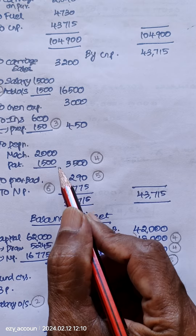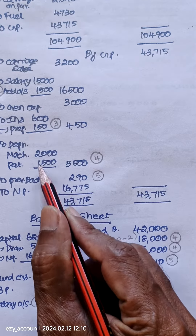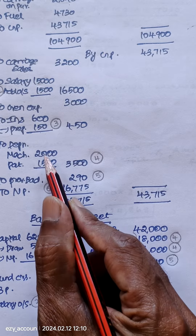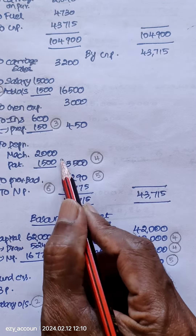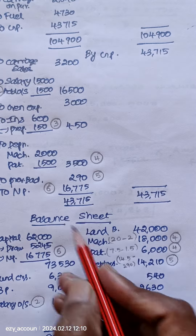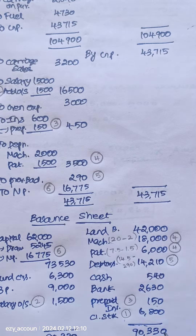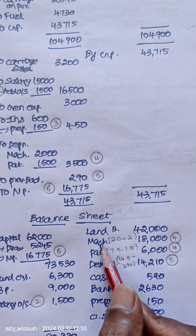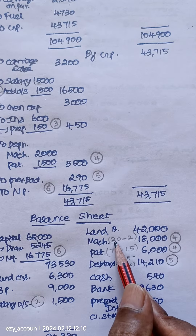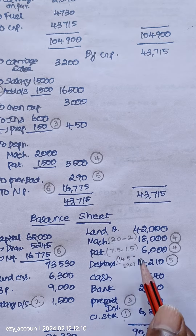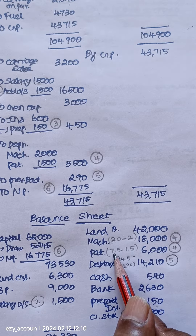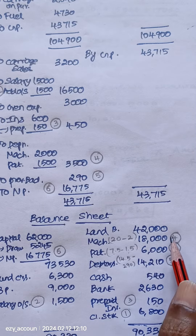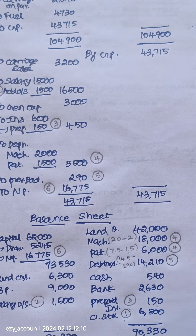The fourth adjustment is depreciation on machinery and patent. Debit the P&L account for depreciation, and reduce it from the assets: minus 20,000 and minus 2,000 for machinery, and minus 7,500 and minus 1,500 for patent.